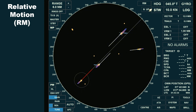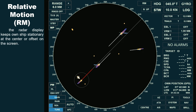In relative motion mode, the radar display keeps our ship stationary at the center, or offset on the screen. As a result, own ship will not display a trail, even if the trail is activated, because own ship is treated as a fixed object. However, the true vector will still appear, as it represents own ship's actual movement relative to the ground. If the vector is switched to relative, no vector will be shown for own ship since she is assumed stationary.